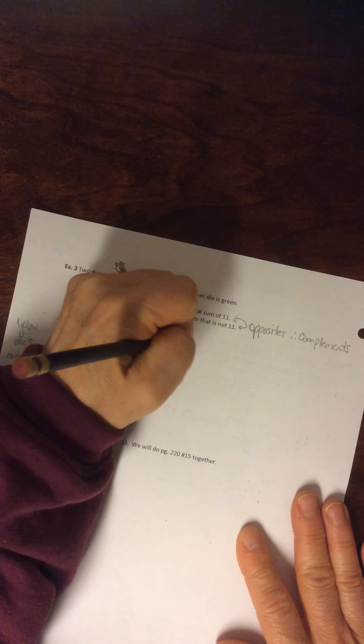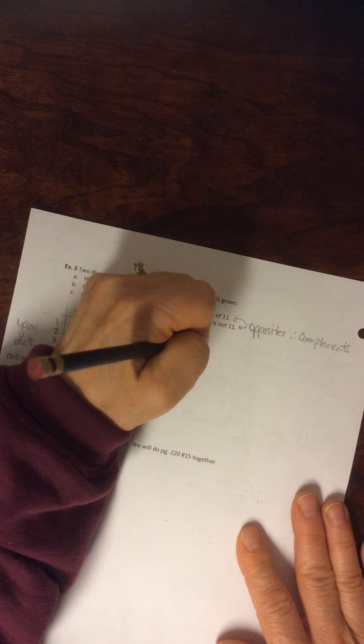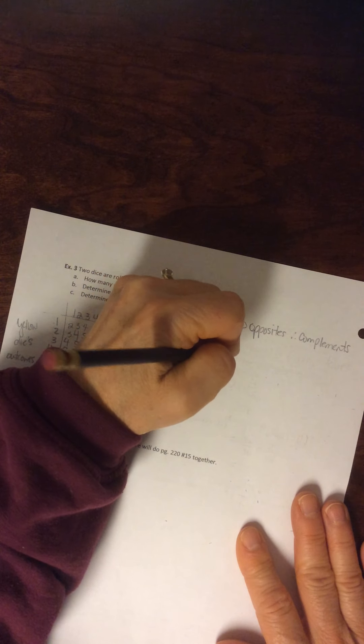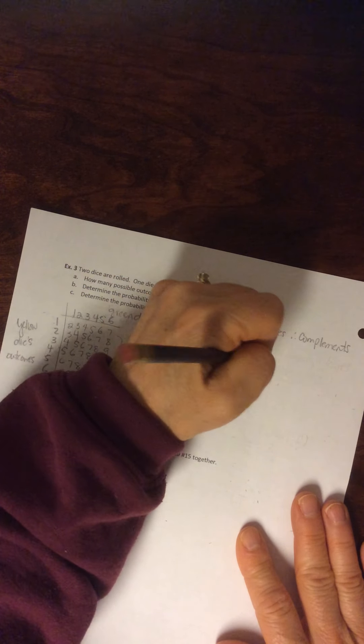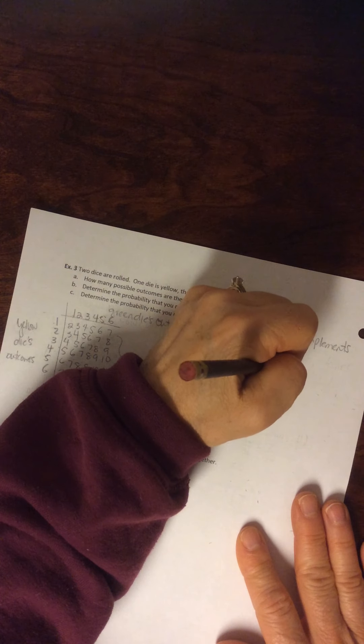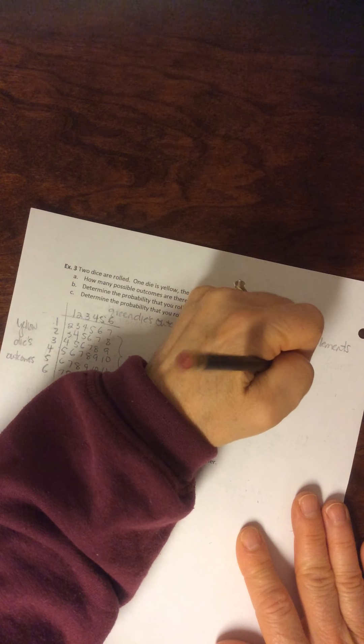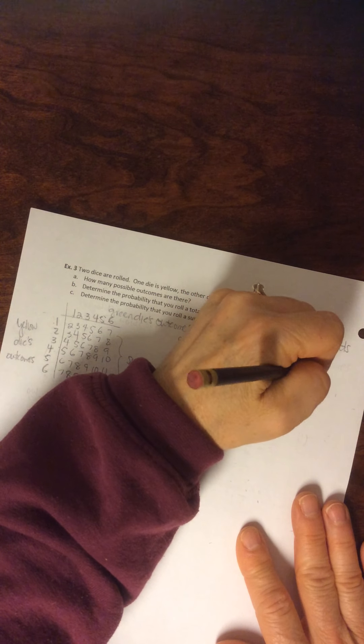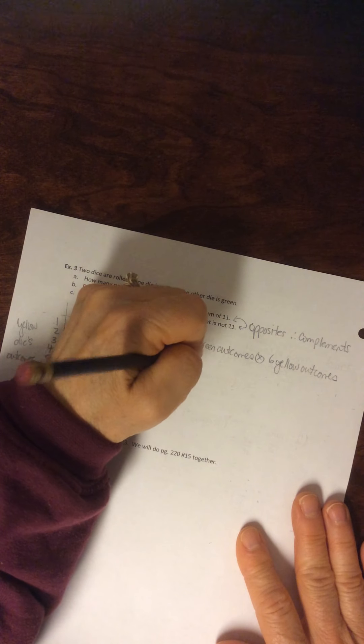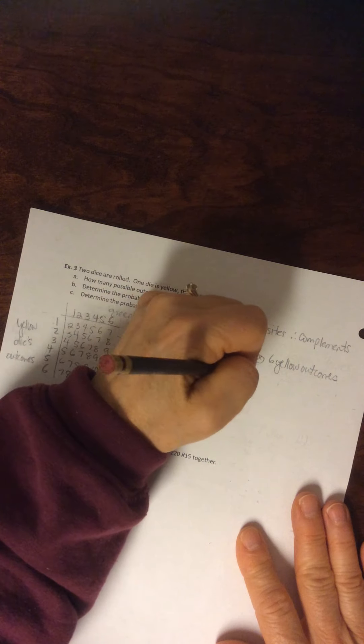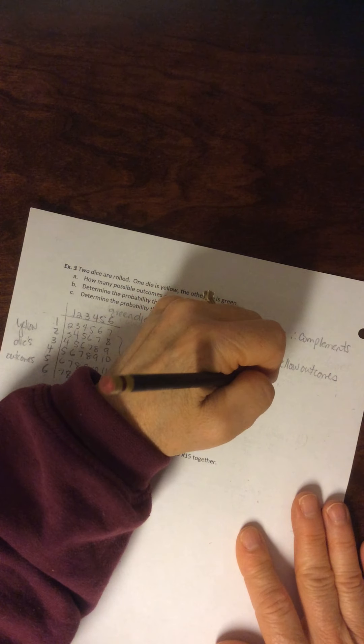Or you could say you've got six green outcomes times six, what's the other color, yellow? Yellow outcomes. So six times six is 36 outcomes in total, okay?